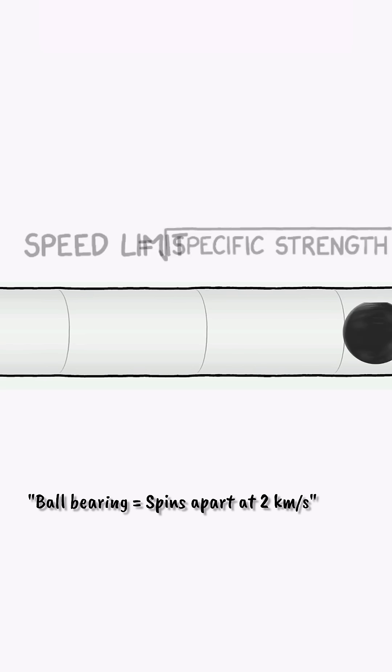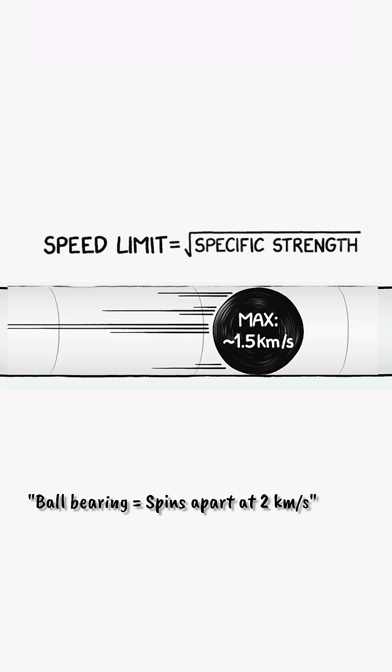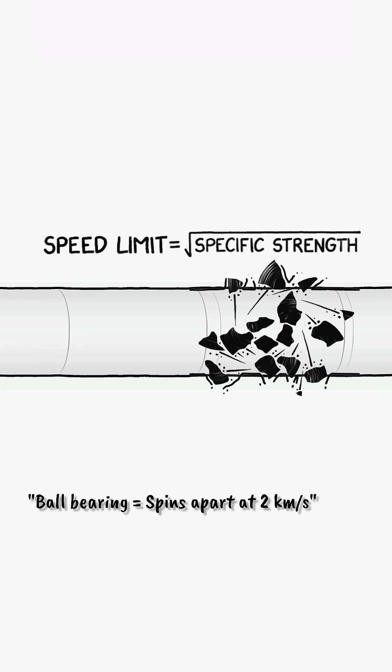What if we build a chute like a bobsled course and send a ball bearing rocketing down it? Sadly, the disc equation strikes again. The ball bearing can't roll faster than a couple of kilometers per second, or it will be spinning too fast and it will also tear itself apart.